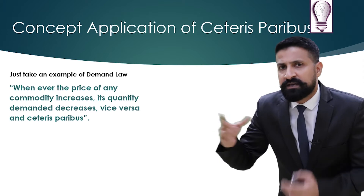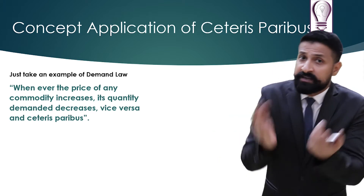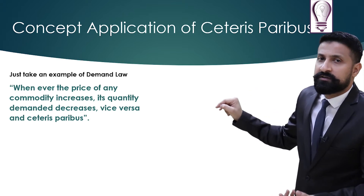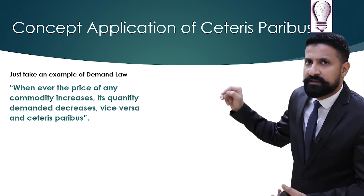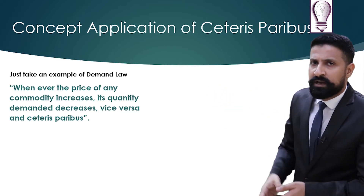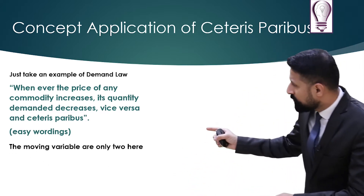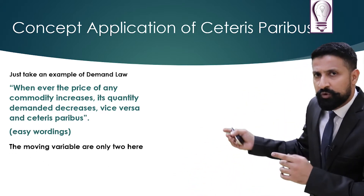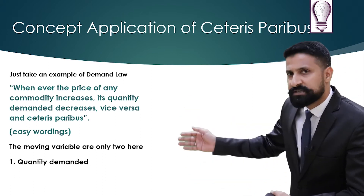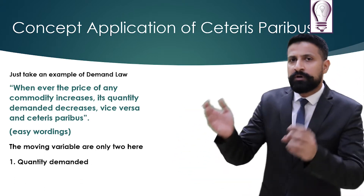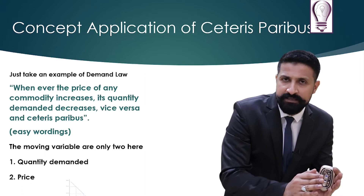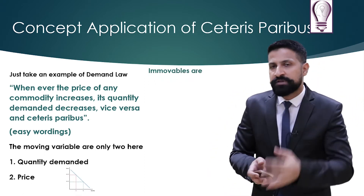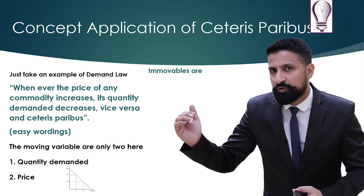Vice versa: whenever the price of any commodity decreases, its quantity demanded will be increased — ceteris paribus. What this means is that only two variables are moving: quantity demanded, due to the fluctuation in price. When the price moves, quantity demanded will move.